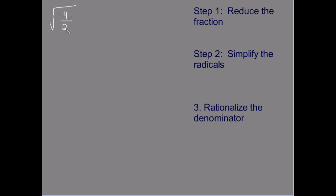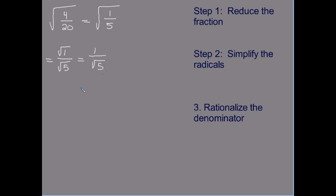Let's start with a fraction underneath a radical. We're going to reduce the fraction first. 4 and 20 both divide by 4, and that gives me the square root of one-fifth. Then we simplify the radicals by splitting this to the square root of one over the square root of five. The square root of one is a perfect square, so that is one, and the square root of five can't be simplified.